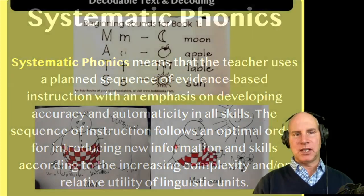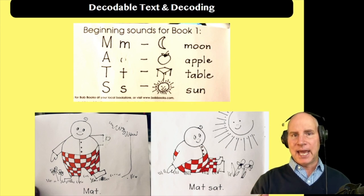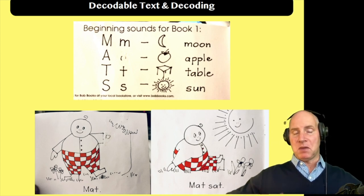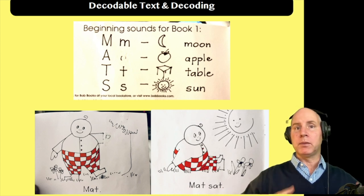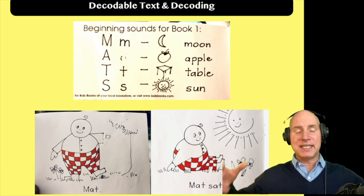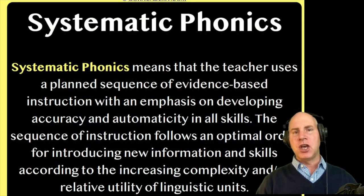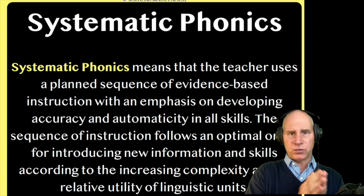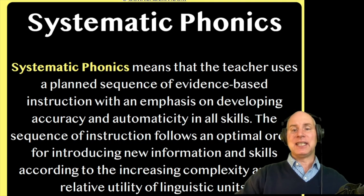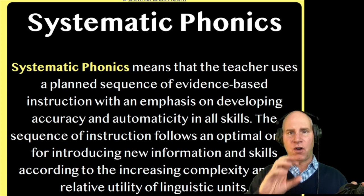So if I go back a couple slides, we would be working with basic CVC words first in the decoding process and make sure the student knows the alphabetical principle. And as they expand, we'll teach them blends, and then consonant diagraphs, maybe vowel diagraphs, and expand out to trigraphs and diphthongs and other phonics rules. With systematic phonics, think of it as always starting with the most basic phonics rules first and expanding out, getting increasingly more complex with each new phonics pattern.